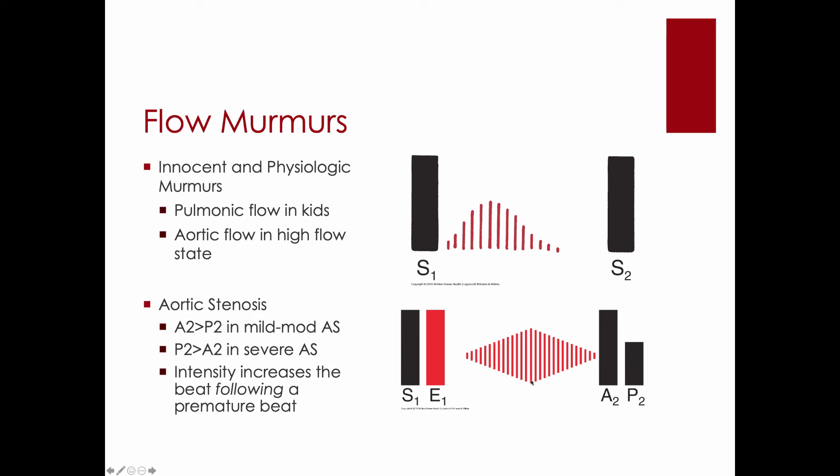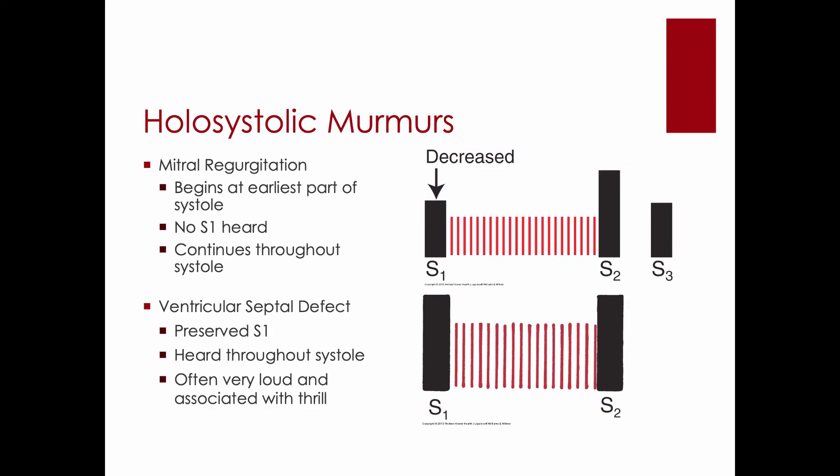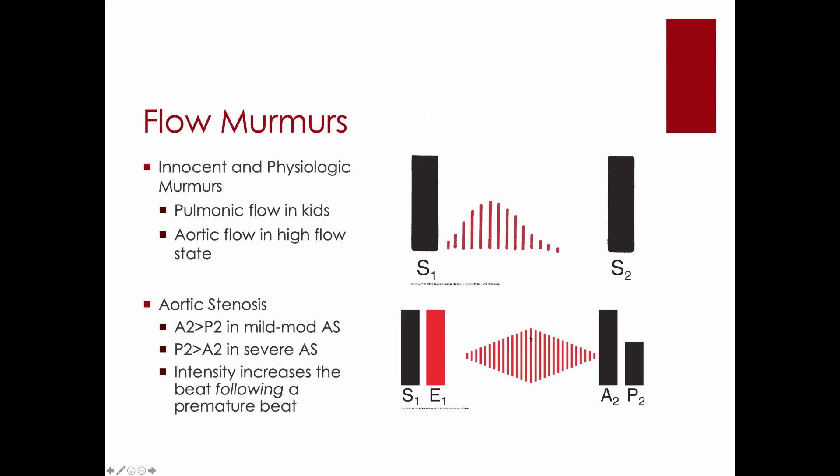We judge the severity of aortic stenosis by what we hear in systole. And if this systolic murmur takes so long to happen that it peaks out here and then overtakes the second heart sound, that's really bad aortic stenosis.